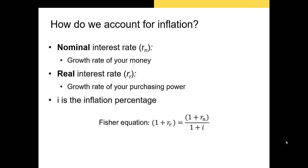Now let's talk about how to account for inflation. The primary way we adjust for inflation is by using the Fisher equation, named after economist Irving Fisher. It essentially says that one plus the real return on a security is equal to the quantity of one plus the nominal return, divided by one plus the inflation rate over the same period. All we need to do to calculate the real return is take this and solve for the real return.